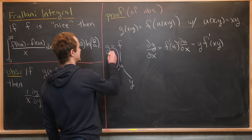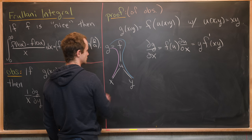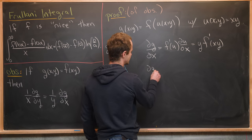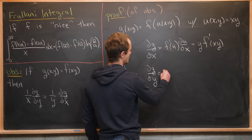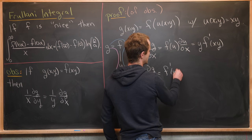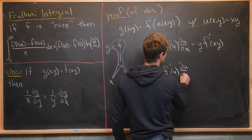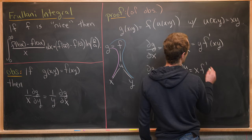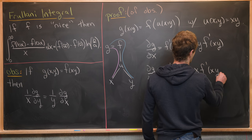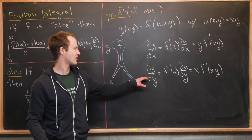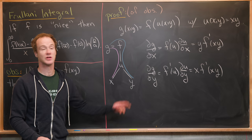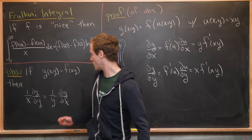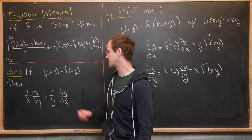Similarly, taking the branch from g down to y: the partial of g with respect to y equals f′(u) times the partial of u with respect to y, which gives x times f′(xy). Comparing the two equations for ∂g/∂x and ∂g/∂y, we have established the observation formula.